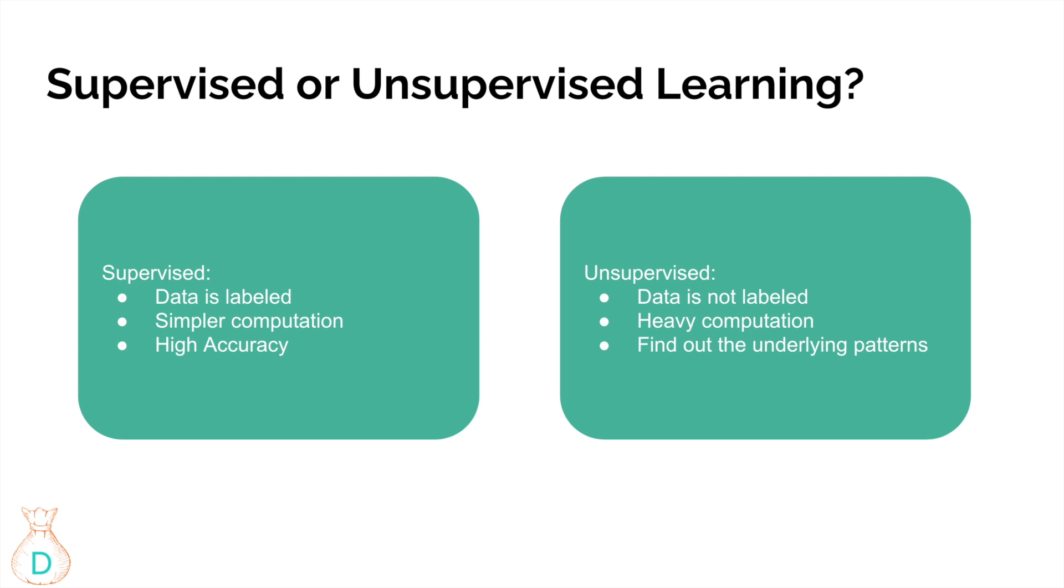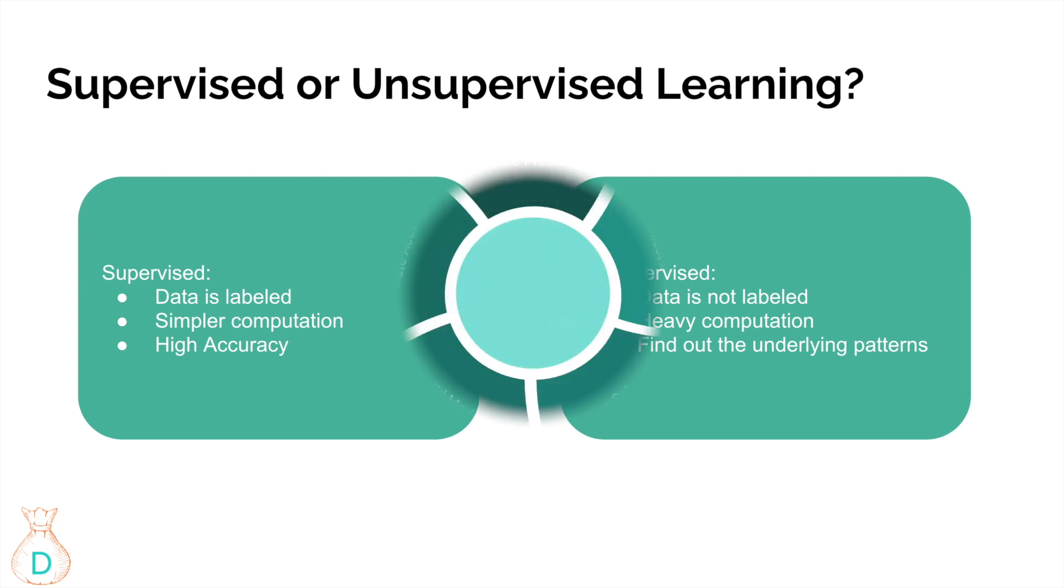Unsupervised learning means you have all these variables or features that you are feeding into the model, but you don't know exactly what you're expecting from the outcome. So the data is completely not labeled. And the downside is that it's very heavy computation, but the good side is that you get to find out what's the underlying pattern.